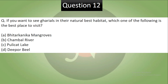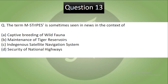Question 12: If you want to see ghariyals in their natural habitat, which of the following is the best place to visit? The options are: Bhitarkanika, Chambal River, Pulicat, and Deepor Beel. Pause the video and try to answer. It is also a factual question and the correct answer is B — Chambal River. Ghariyals are found in the largest numbers in the Chambal River, which is their natural habitat.